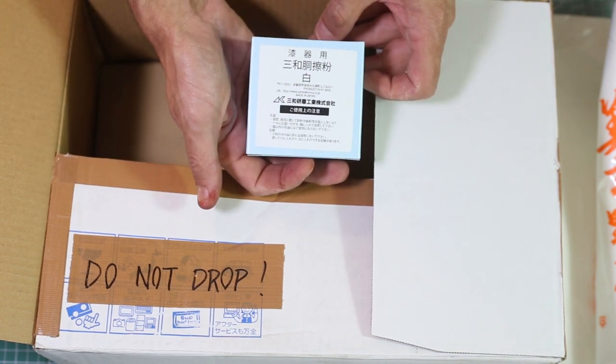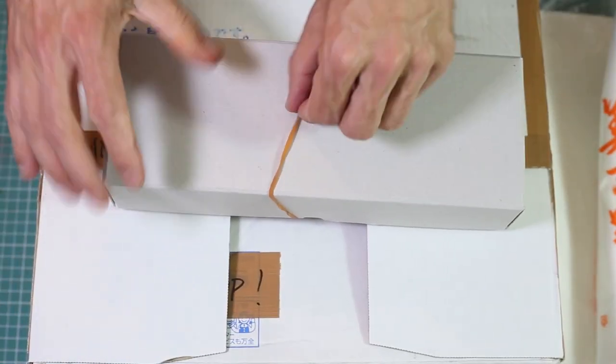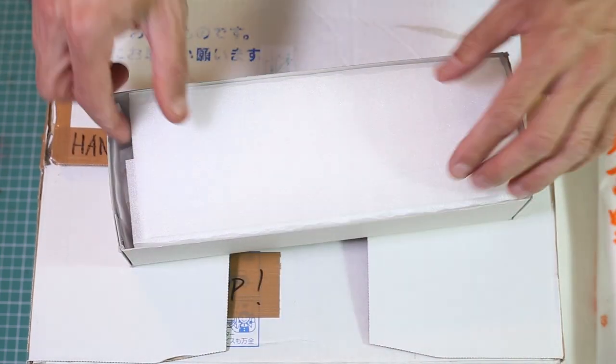And this is a powder from Sanwa. This powder is used for Dozuri. So initial polishing of the final layer of lacquer.